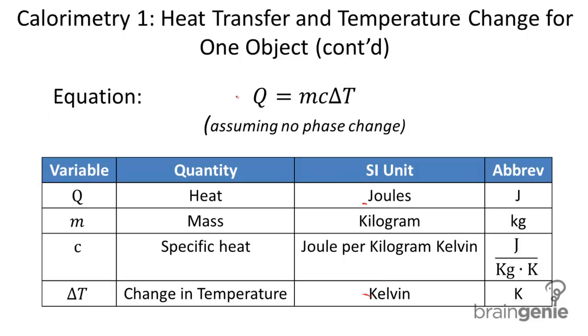Q is our variable for heat. M is our variable for mass. C is our variable for specific heat capacity. And then delta T is the actual temperature change, the actual change in temperature.